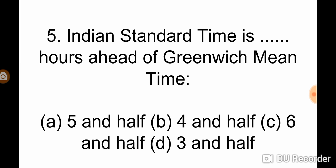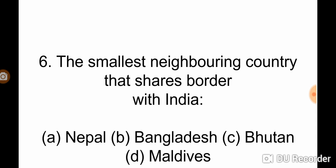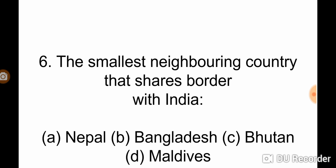India Standard Time is five and a half hours ahead of Greenwich Mean Time. The smallest neighboring country that shares borders with India? Bhutan.